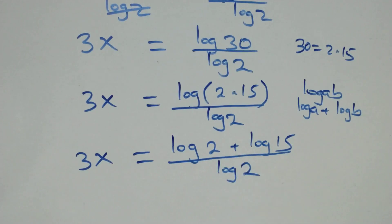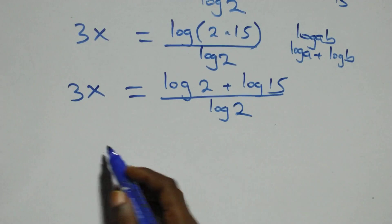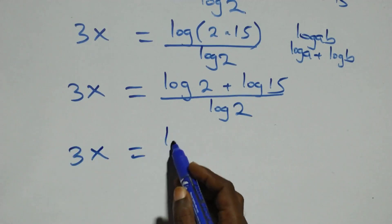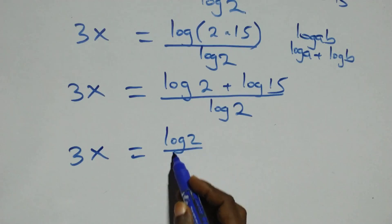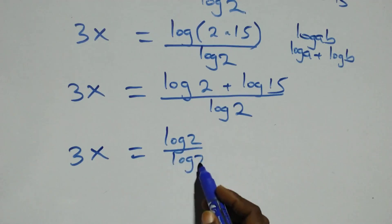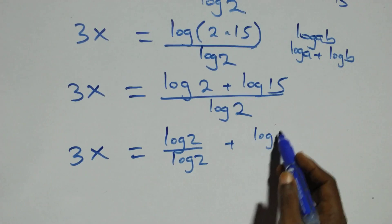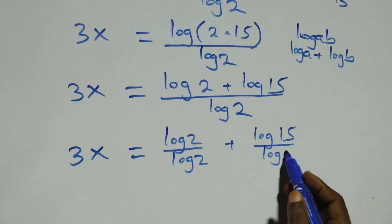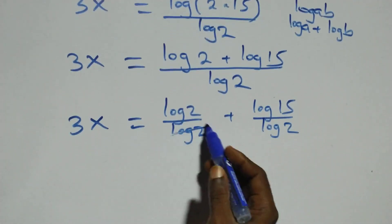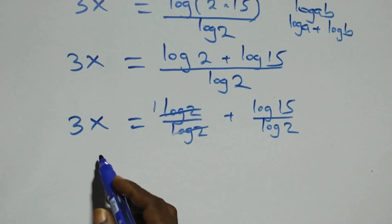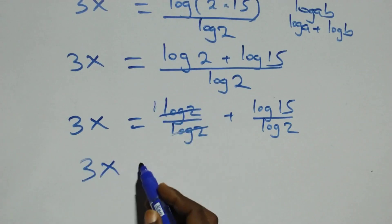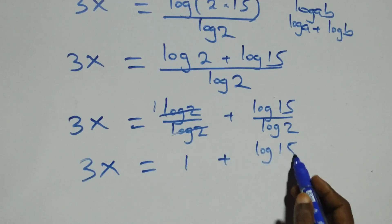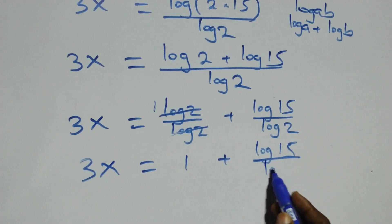The log two in the numerator and log two in the denominator cancel each other. We separate this into two fractions: three x equals log two over log two, plus log fifteen over log two. Log two over log two gives one, so three x equals one plus log fifteen over log two.